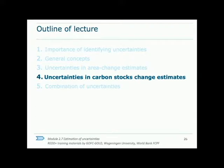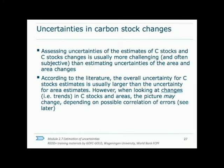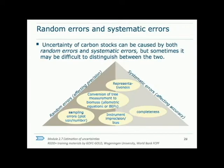Moving on to carbon stock change estimates. In general, uncertainties in carbon stock changes tend to be more difficult to obtain and are higher than those of area change. This is because systematic biases are harder to account for, since the procedure cannot be sampled and assessed in a similar way to an area change map. Just like area change estimates, there are both random and systematic errors in estimating carbon stocks, though they may be more difficult to distinguish between.